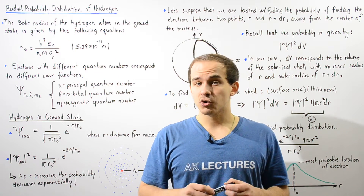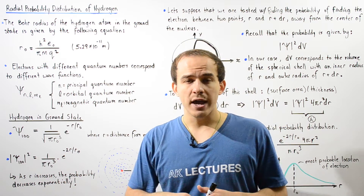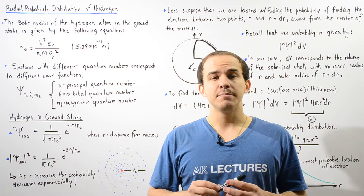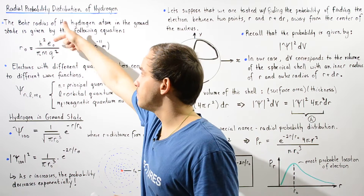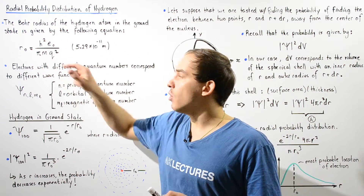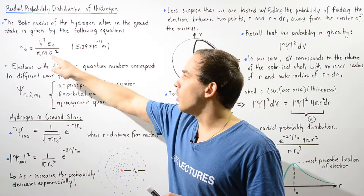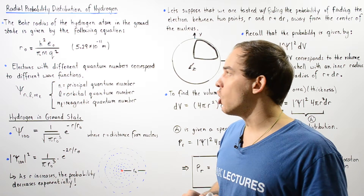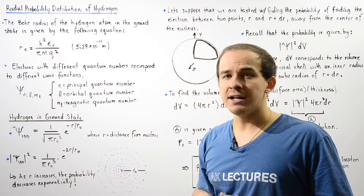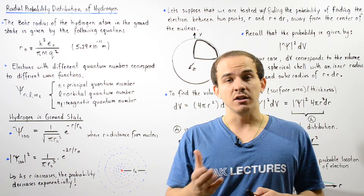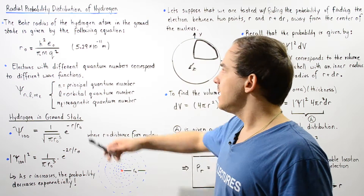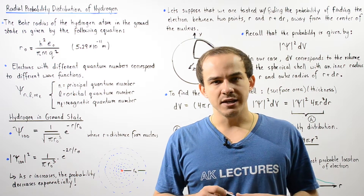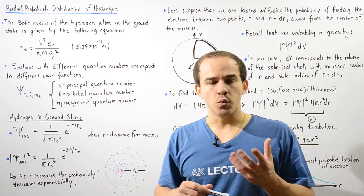The Bohr radius of the hydrogen atom in the ground state is given by this equation: R-naught, the Bohr radius, is equal to h-squared multiplied by the permittivity of free space epsilon-naught, divided by pi multiplied by m the mass of the electron, multiplied by q the charge of that electron given in Coulombs. Plugging in our constants, the Bohr radius of the electron in the ground state of the hydrogen atom is approximately 5.29 times 10 to the negative 11 meters.